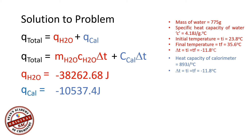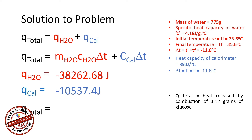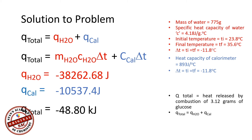To get the total heat energy released, we add the two values: Q_total = Q_H2O plus Q_cal = −48,800.08 joules. Dividing by 1000, since the value is greater than 1000, Q_total equals −48.80 kilojoules. This is the total energy released by the combustion of 3.12 grams of glucose.